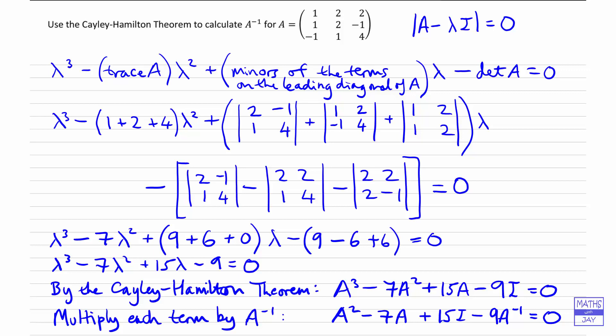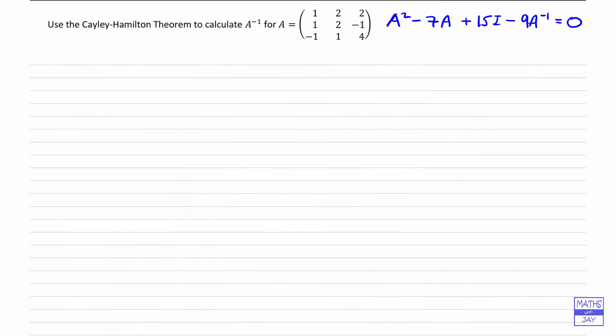That is the important equation. We don't need anything else on this page — just that equation. Because we want to find the inverse of A, let's make 9 times A⁻¹ the subject. So what we now know is that 9A⁻¹ equals A squared minus 7A plus 15I. Multiplying A and I by constants is straightforward; the only slightly tricky part is squaring the matrix A.